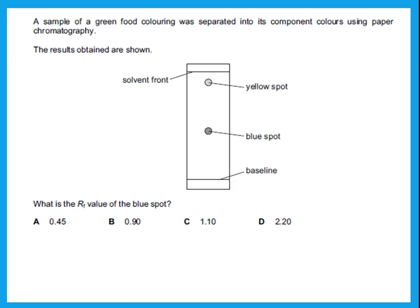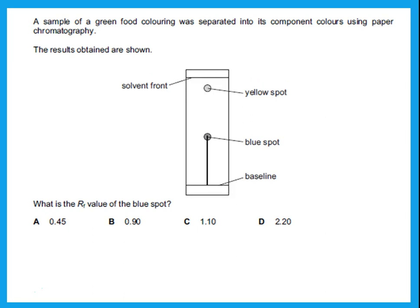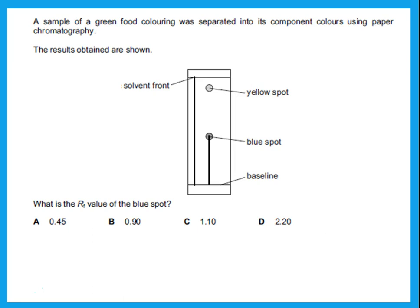A sample of green food coloring was separated by paper chromatography. To find the RF value of the blue spot: use a ruler to measure the distance from the baseline to the middle of the blue spot, then measure the distance from the baseline to the solvent front. Divide the first by the second. In this case, the RF value of the blue spot is 0.45.